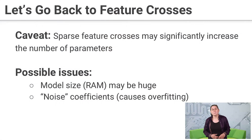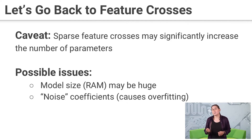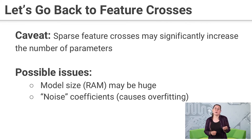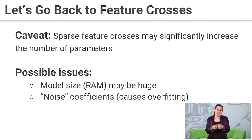Let's dig a little deeper into feature crosses. They can be great, but they can also cause some problems. In particular, if we're crossing sparse features — for example, maybe one of our features is the words in a search query, and the other feature might be the unique videos that we have to look up — we might have millions of possible words, millions of possible videos, and crossing those, we're going to get a lot of coefficients.